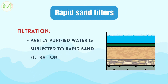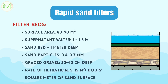All these steps partly purify the water, which is then subjected to rapid sand filtration. The rapid sand filter bed has a surface area of about 80 to 90 square meters. The depth of the supernatant water is again 1 to 1.5 meters. The sand bed is 1 meter deep with a sand particle size of about 0.4 to 0.7 millimeters, beneath which there is a layer of graded gravel approximately 30 to 40 centimeters deep. The rate of filtration here is 5 to 15 cubic meters per hour per square meter of sand surface.